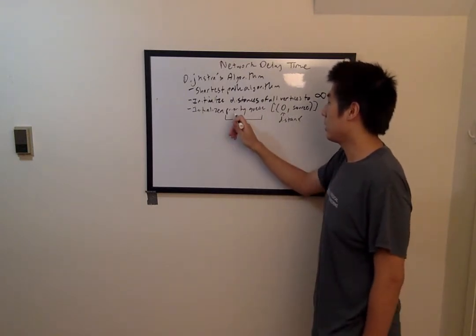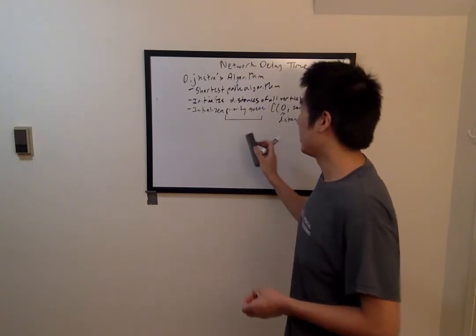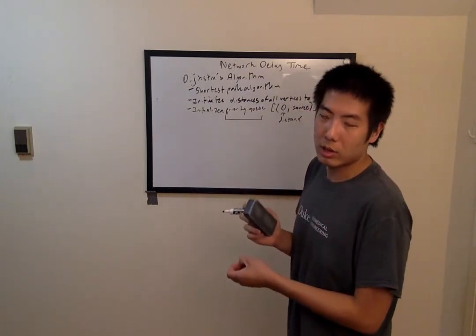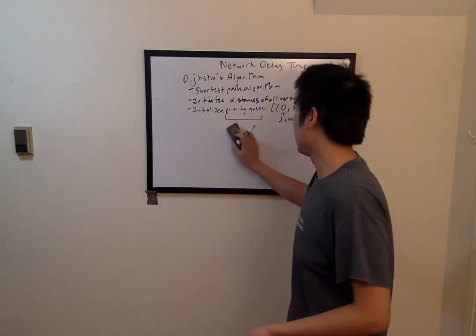However, a priority queue adds a twist. You can have a score that represents how important the object is in the relative ordering in the queue, and then use that to determine who should come out of the queue first.